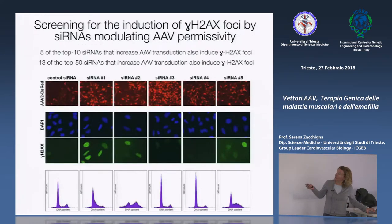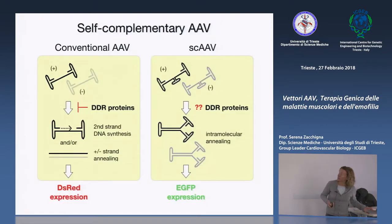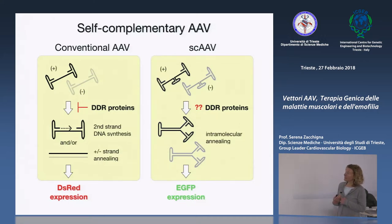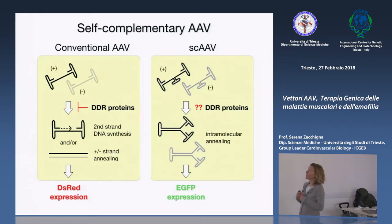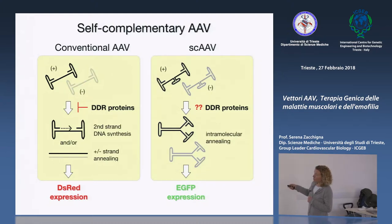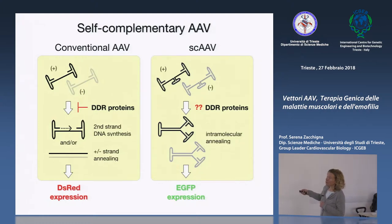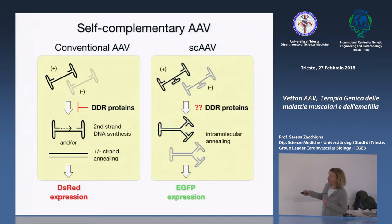Molte delle proteine identificate come blocco alla trasduzione di AAV sono coinvolte nella risposta al DNA danneggiato e nella riparazione del DNA, confermando il modello DDR. Questo ha portato a esaminare anche i self-complementary AAV: vettori AAV con DNA sempre a singolo filamento ma progettati con polarità opposte che possono appaiarsi tra due genomi di AAV diversi, bypassando la necessità della sintesi del secondo strand di DNA per l'espressione genica.